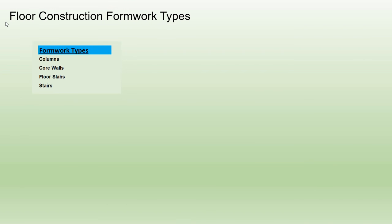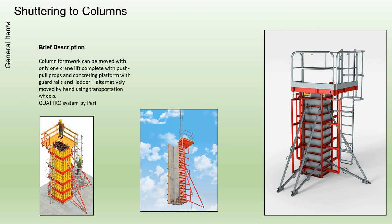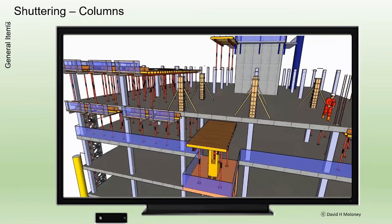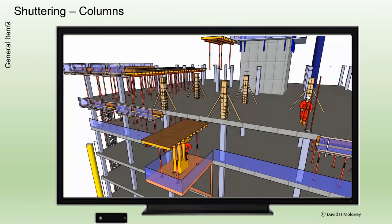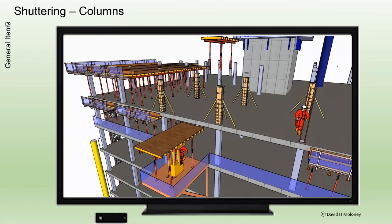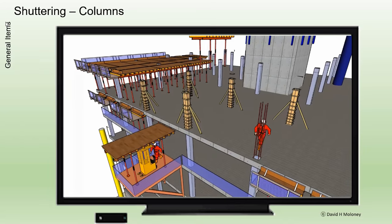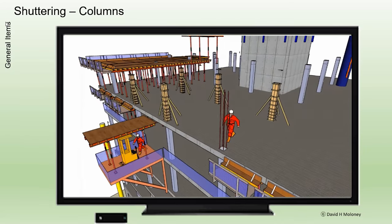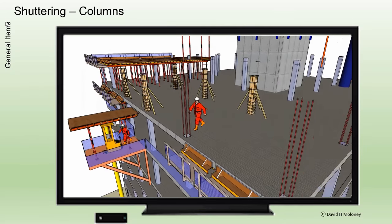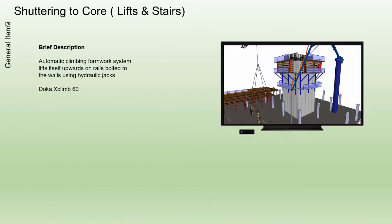Formwork Types — Columns. Column formwork can be moved with only one crane lift, complete with push-pull props and concreting platform with guardrails and ladder. Alternatively, it can be moved by hand using transportation wheels.